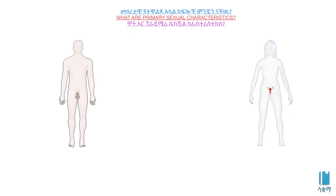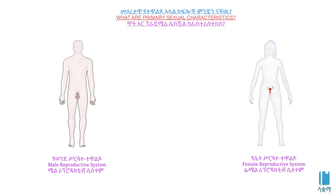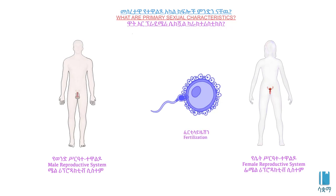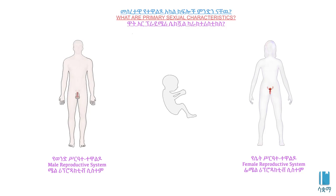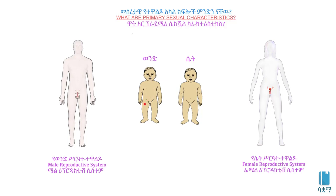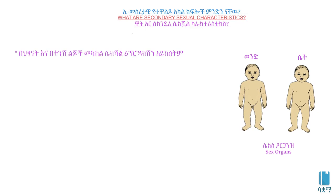The Human Reproductive System is one of the most important aspects of the human reproductive system.